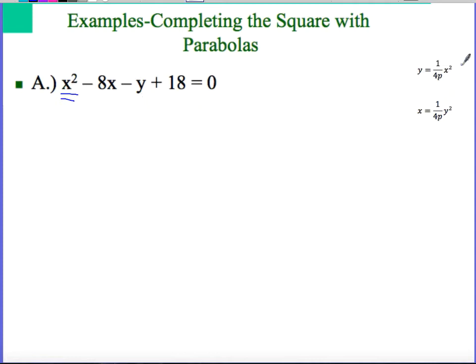If the x is squared, it's going to look like the first version of our standard form of the parabola, y = 1/(4p) × x². That means there's only one squared portion, the x². There is no perfect square on the y. When we talk about needing to use completing the square, I'm really only completing the square once on the squared term.